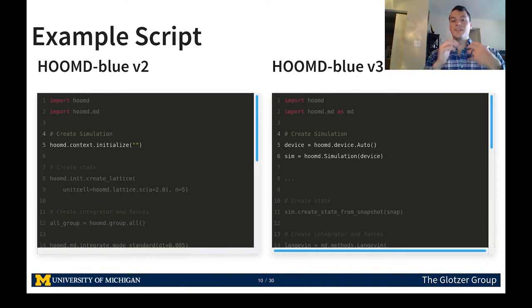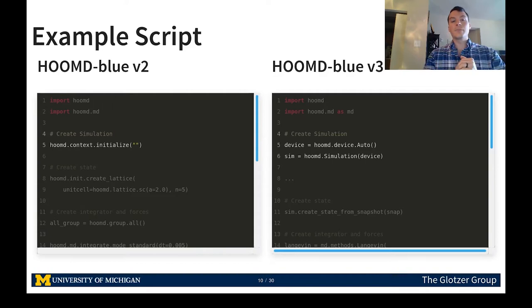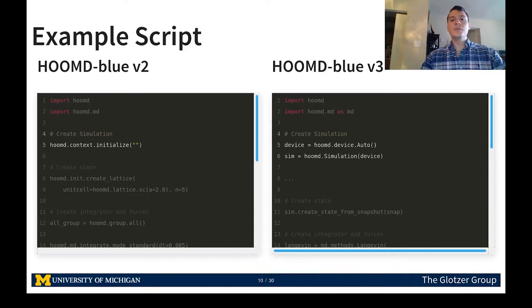We now discuss the HOOMD-Blue version 3 API. Here we have an example script for both version 2 and version 3 that run a molecular dynamics simulation of Lennard-Jones particles for 100,000 time steps. First, we create the simulation context. In version 2, a quasi-global simulation context is maintained behind the scenes without storing a reference. In version 3, we explicitly create a simulation object, which makes running multiple simulations easier and makes the architecture easier to understand directly.